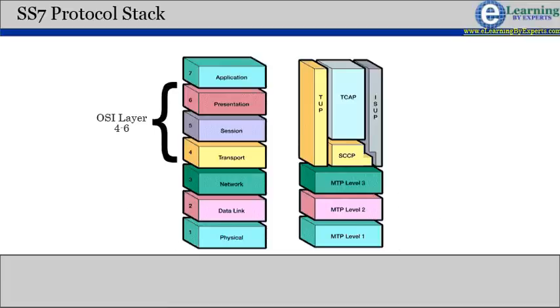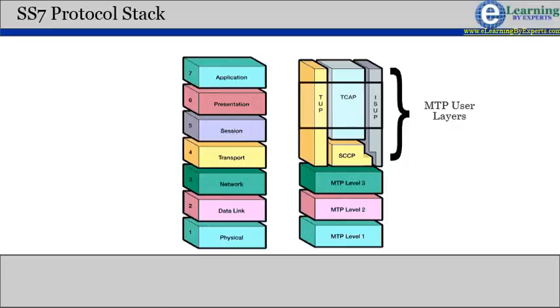The SS7 architecture currently has no protocols that map into OSI layers 4 through 6. TAP, ISUP, and TCAP are considered as corresponding to OSI layer 7.